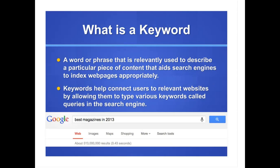So what are these keywords? Keywords are a word or phrase that is relevantly used to describe a particular piece of content that aids search engines to index web pages appropriately. Keywords help connect users to relevant websites by allowing them to type various keywords — called queries — in the search engine. Now you see that Google box below, and inside that search box I have the query: best magazines in 2013.